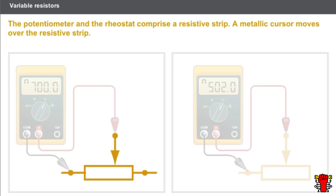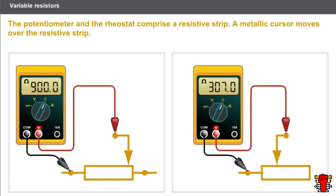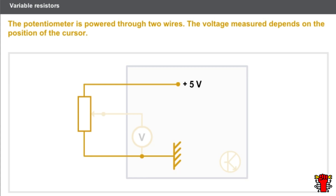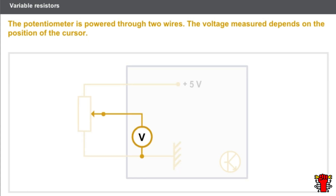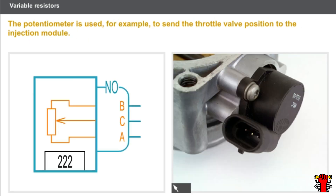The potentiometer comprises a resistive strip with two connections. A metallic cursor moves over the resistive strip. The resistance measured between the metallic cursor and one end of the resistive strip depends on the position of the cursor. The potentiometer is powered through two wires. The computer measures the voltage between the cursor and one end of the resistive strip, which depends on the position of the cursor. The potentiometer is used, for example, to send the throttle valve position to the injection module.